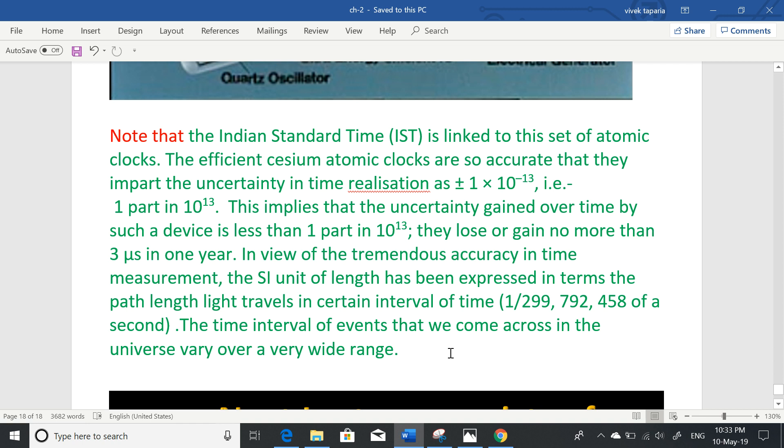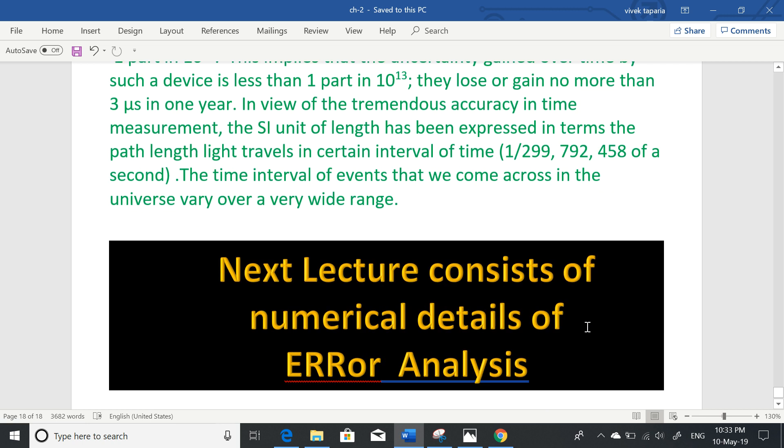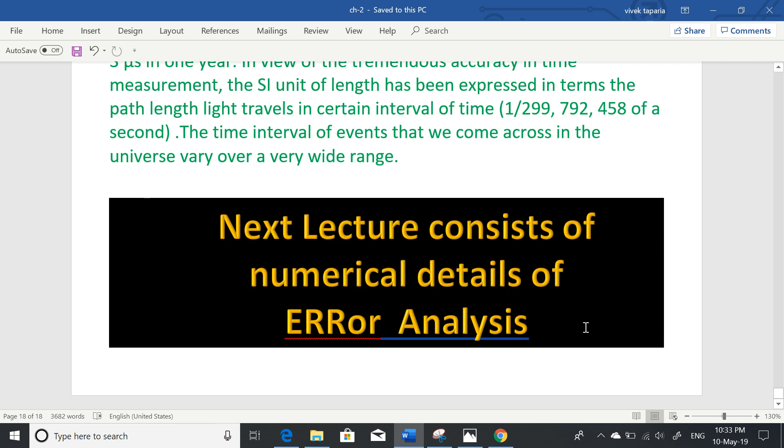The actual speed of light is 299,792,458 meter per second. So today we talked about in this lecture mass measurement, time measurement. Next lecture, numerical details will come. Till now it was all theoretical, so we will study error analysis in the next lecture. Till then, enjoy.